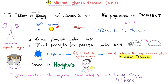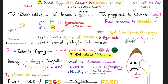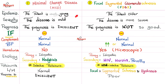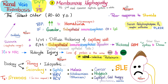Let's review diseases discussed before. Minimal change disease: nephrotic, associated with Hodgkin's, seen in kids. Focal segmental glomerulosclerosis: usually nephrotic with proteinuria, associated with heroin, HIV, Parvovirus B19. Membranous nephropathy: remember hepatitis B, hepatitis C, syphilis, malaria. Remember the thrombosis.